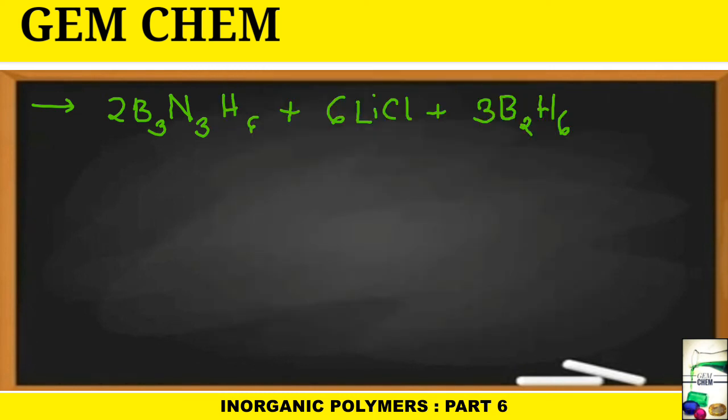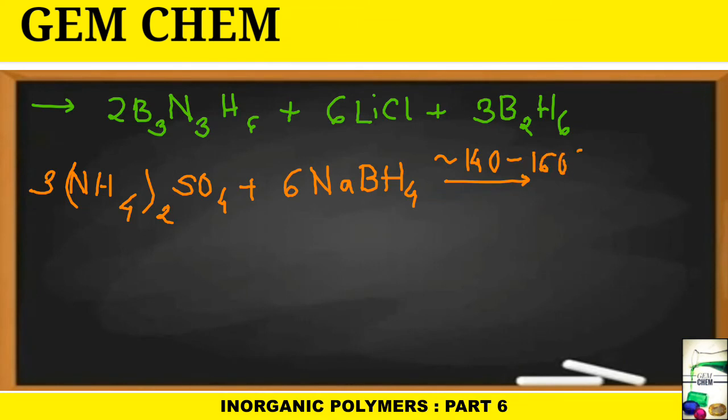We will consider a slightly modified version of this method where we can perform it in one step. Another method is a modified method where reaction of ammonium sulfate and NaBH₄ occurs. We take 3(NH₄)₂SO₄ plus 6NaBH₄ at about 140 to 160°C to form 2B₃N₃H₆ plus other products, that is 3Na₂SO₄ plus 18 hydrogen.